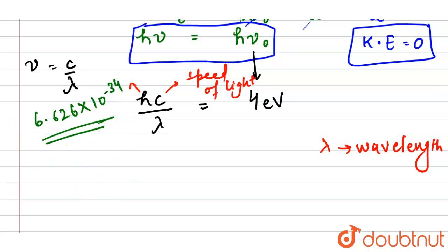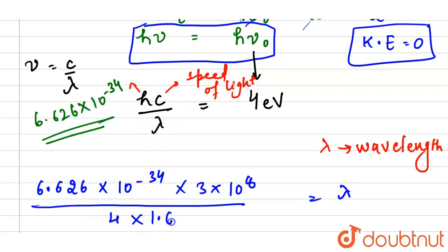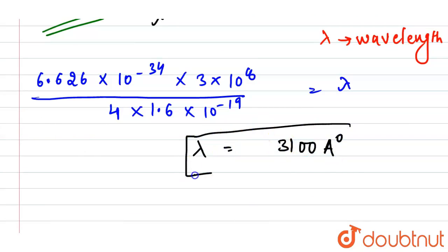Substituting the values: h = 6.626 × 10⁻³⁴, c = 3 × 10⁸. Rearranging, λ = hc divided by (4 × 1.6 × 10⁻¹⁹), where we have converted 4 electron volts to joules. Our lambda value comes out to be 3100 angstrom.